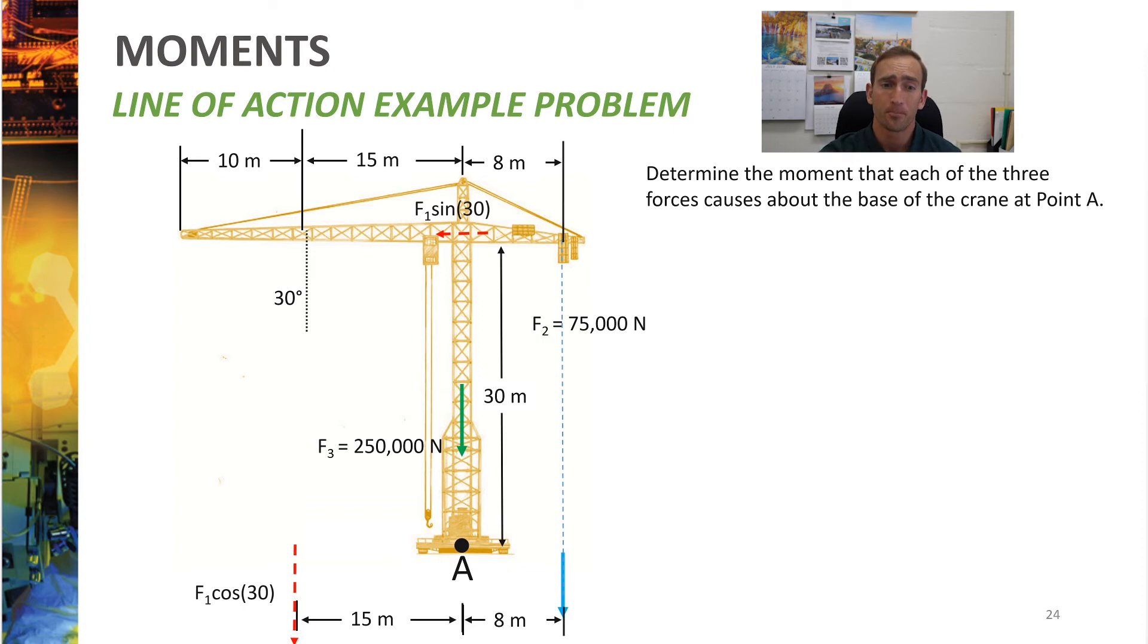But what about F3? Well, F3 is actually the easiest of all of them to calculate because guess what? F3 passes through point A. So it does not cause any moment at all.